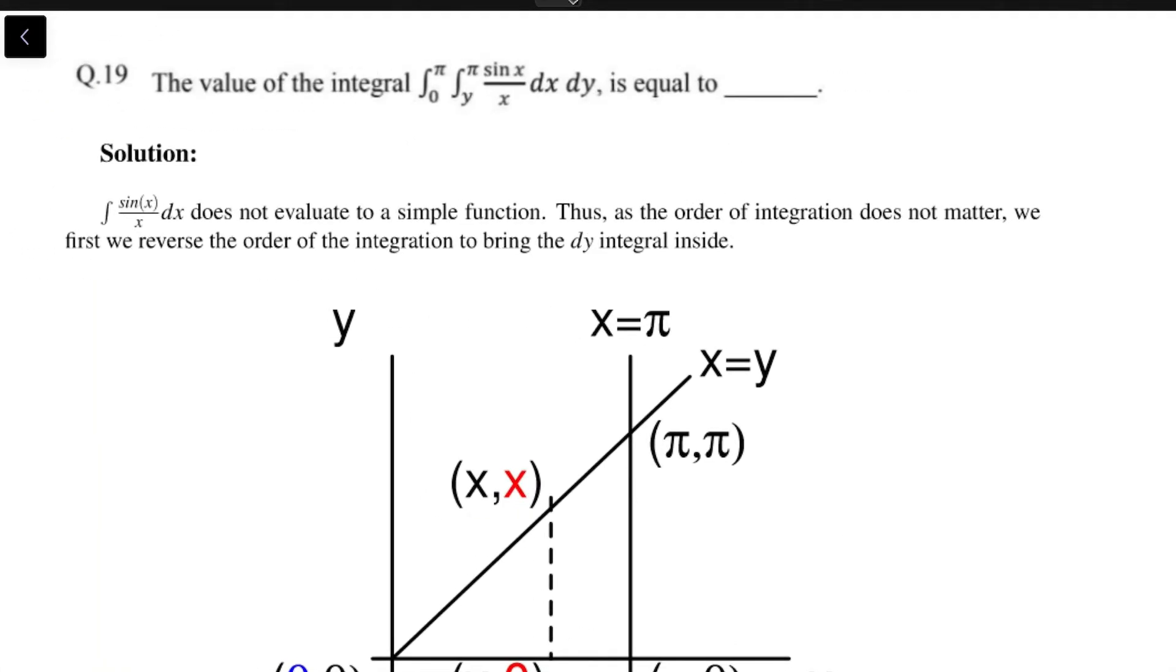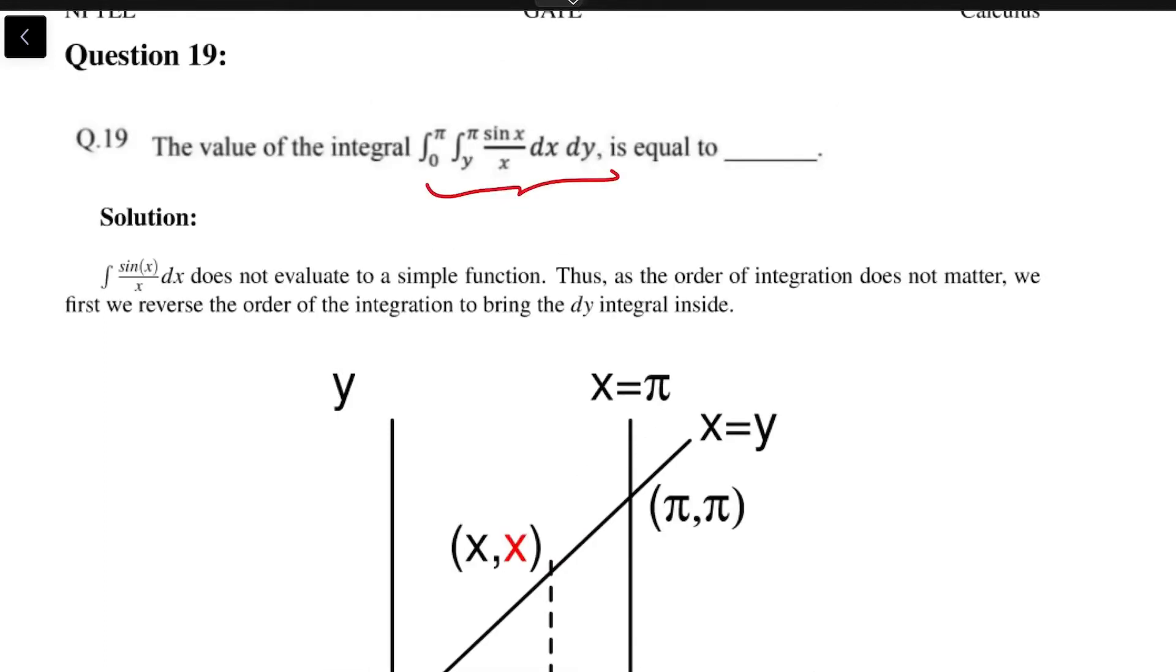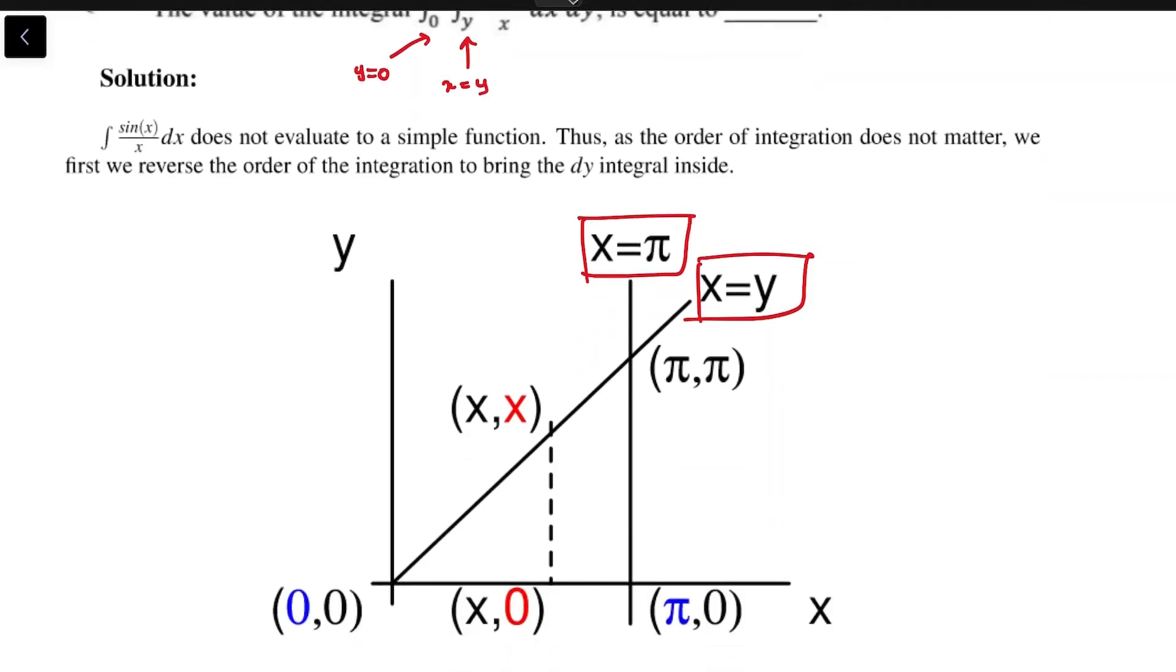To change the limits, you will have to draw the following diagram corresponding to the original integral. First look at the inner integral limits, which is from x equal to y to x equal to π, so we draw those two lines first. Then the outer integral, which is y equal to 0 to y equal to π—y equal to 0 is the x-axis, and y equal to π will pass through that point.